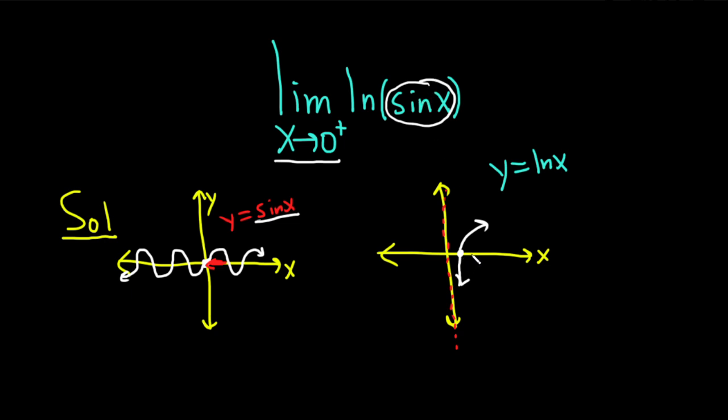Well, if you look at the graph of ln, what happens when you approach 0 from the right? Well, it approaches negative infinity. The answer is negative infinity.